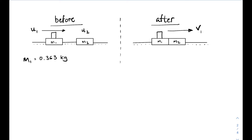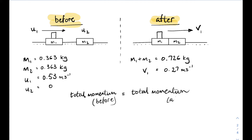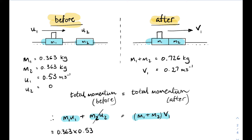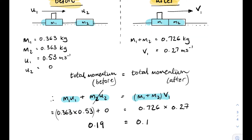Here's our setup before and after the collision. Mass one and mass two were the same — 363 grams. The first speed was 0.53 metres per second and the second vehicle was stationary. Afterwards, both masses stuck together: combined mass 726 grams, moving at 0.27 metres per second. Momentum before: 0.363 × 0.53 = 0.19. Momentum after: 0.726 × 0.27 = 0.19. Momentum is conserved. Bingo!